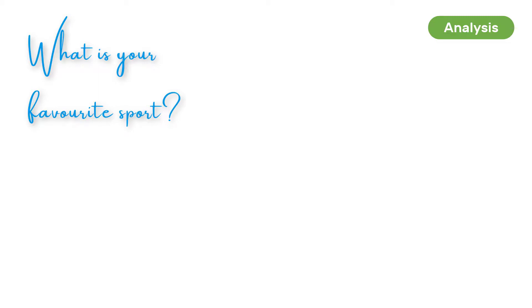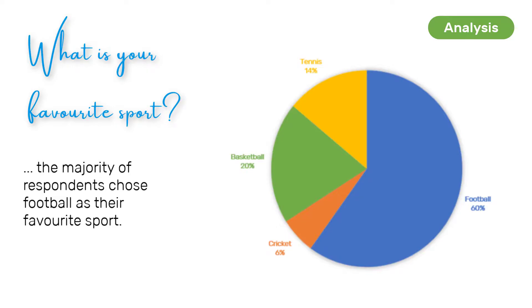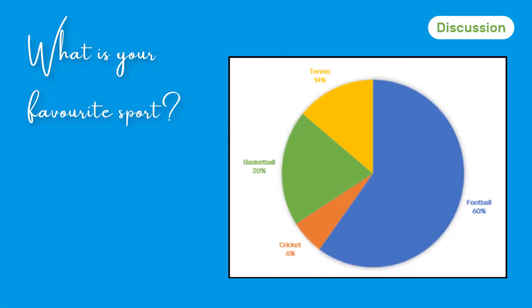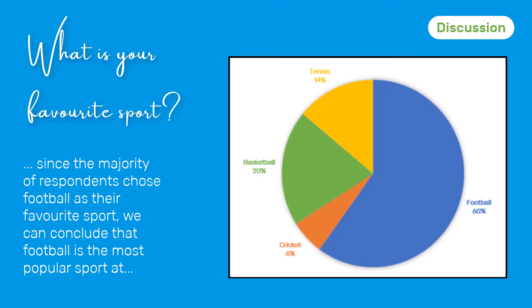For example, let's say that in your SBA one question asked persons what is their favorite sport, and the majority of respondents chose football. In your analysis, you would write: the majority of respondents chose football as their favorite sport. But in your discussion is where you would say something like: since the majority of respondents chose football, it seems that football is the favorite sport of students at so-and-so high school. So there's a thin line — you have to walk it very carefully. Just describe the data in your analysis.